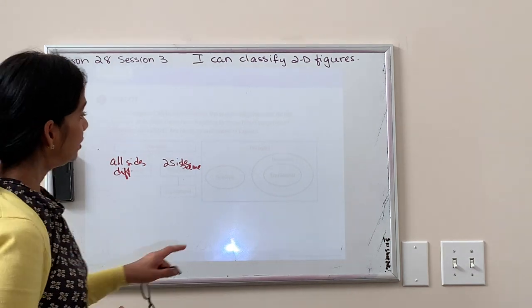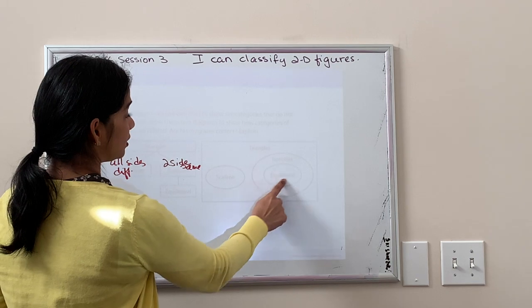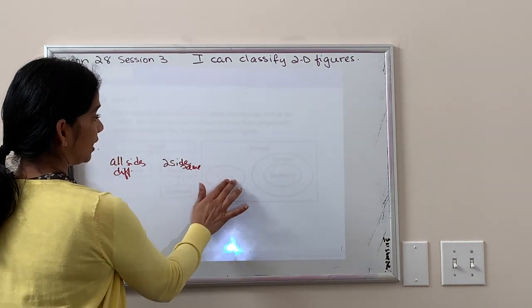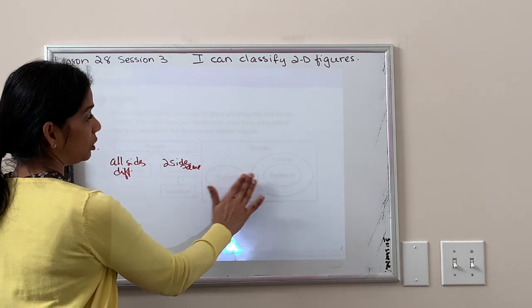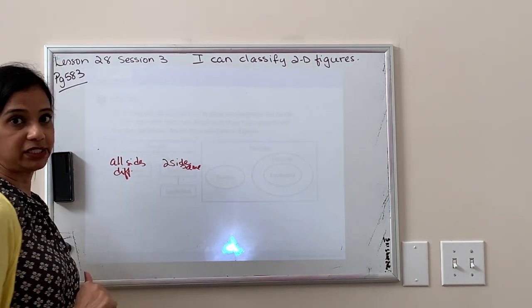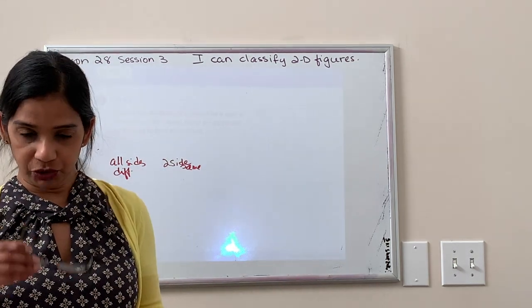And if we look at the Venn diagram, it does show that too because equilateral is a subcategory of isosceles and then you have these separate of scalene because they don't intersect at all. They don't share similar traits, properties. All right, let's move on to number three.